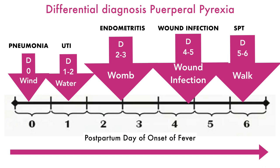There are two more W's not shown here. Fever arising on postpartum day 7 to 21 is because of mastitis or breast abscess. Drug-induced fever can occur at any time; common drugs that can cause fever are alpha-methyldopa and nifedipine. Another important cause in a tropical country like India is malaria, which can occur at any time.